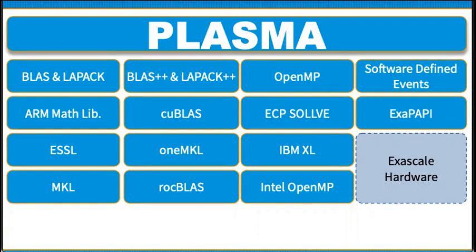PLASMA also includes support for many other vendors and software stacks. The complete diagram as supported within the ECP project shows BLAS and LAPACK as the chosen compute interfaces for ARM math libraries, IBM's ESSL, and Intel's MKL. BLAS++ and LAPACK++ are the interfaces supported on top of cuBLAS, oneMKL, and rocBLAS on GPU accelerators. OpenMP and related ECP projects such as BOLT, IBM XL compiler, and Intel OpenMP support both CPUs and GPUs, including software-defined events and PAPI for performance and profiling across all exascale hardware platforms.